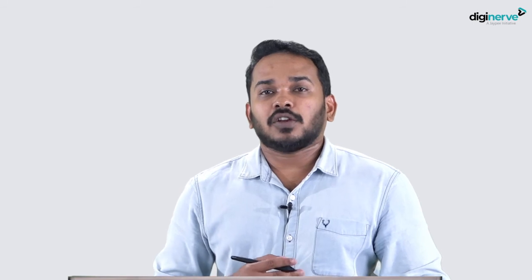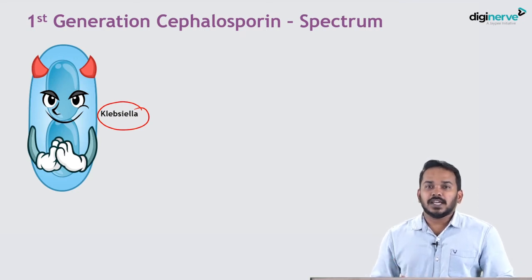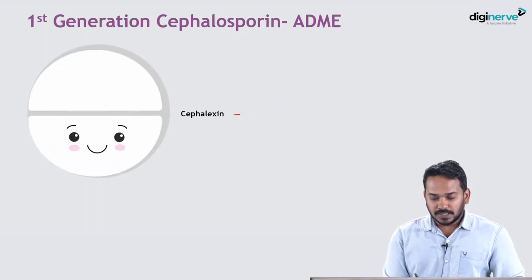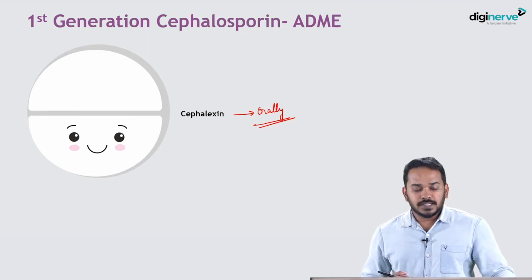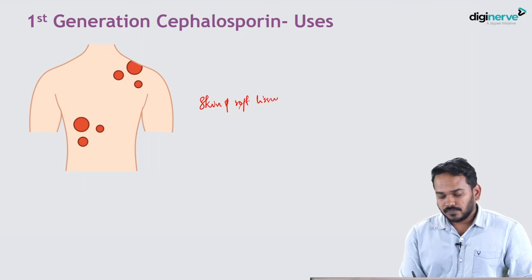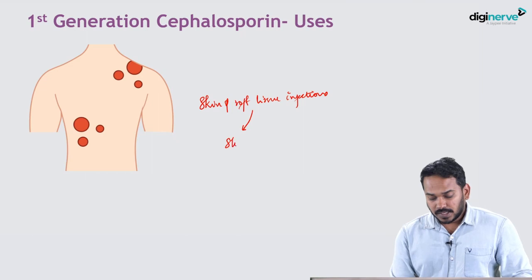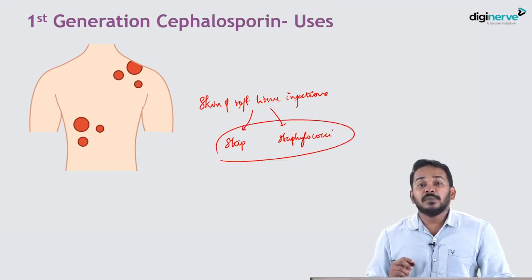The first generation cephalosporins are not narrow spectrum like the narrow spectrum penicillins. They have activity against both gram-positive and gram-negative organisms. Cefazolin is given parenterally and cephalexin is given orally. First generation cephalosporins are used for skin and soft tissue infections, as the most common causative organisms — streptococci and staphylococci — are both inhibited by them.